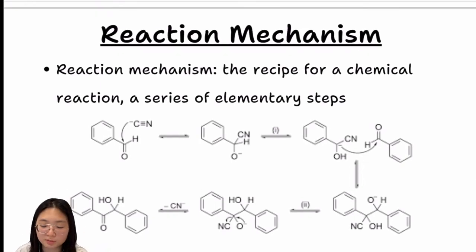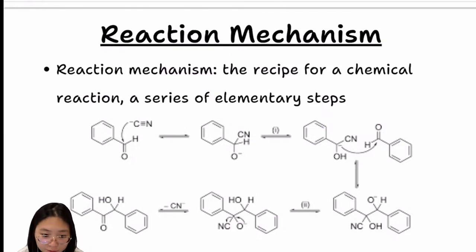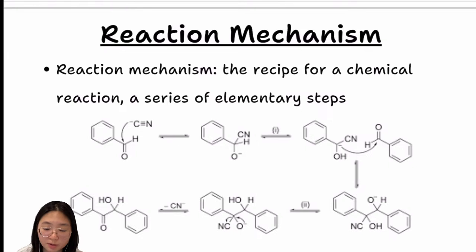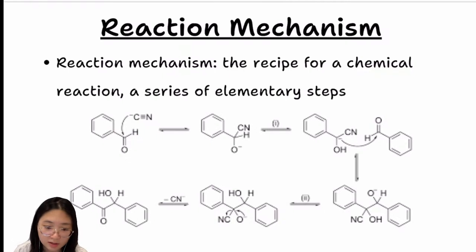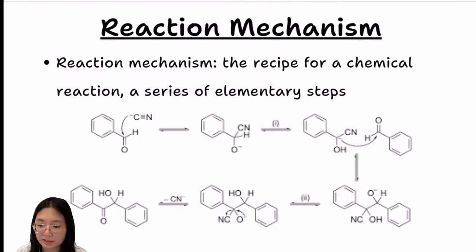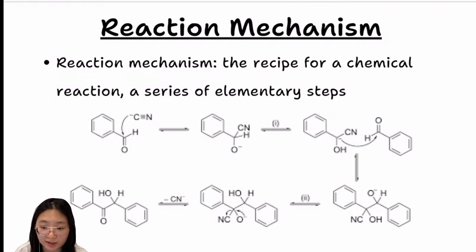Now we're done with the macroscopic perspective — measuring concentration and time. Now let's look at what's actually happening at the particle or molecule level. We need to study reaction mechanisms — I call it a recipe for a chemical reaction. It includes a series of elementary steps, like a baking recipe with step-by-step instructions: mix egg yolk and flour, add butter, set oven at 400 degrees, bake.